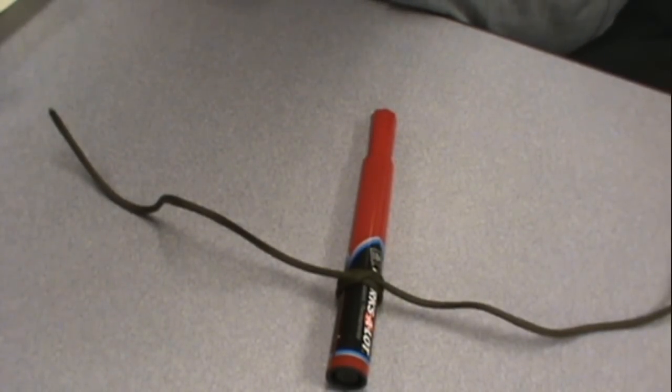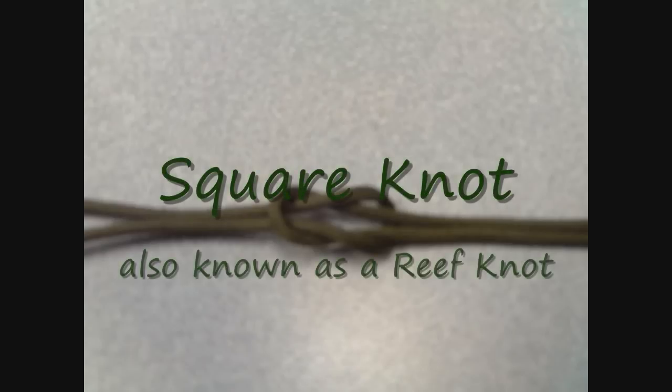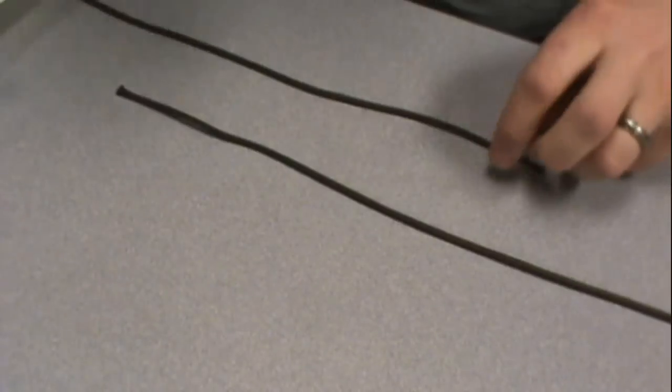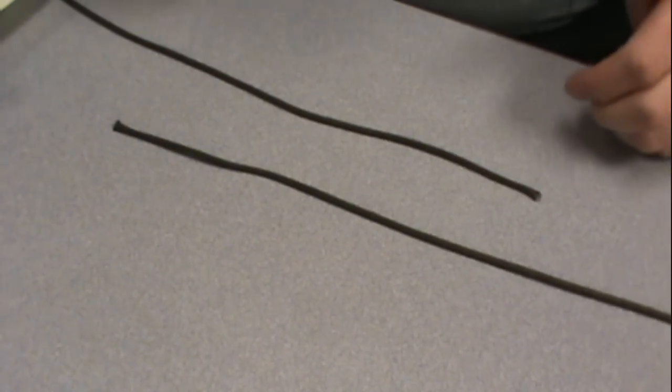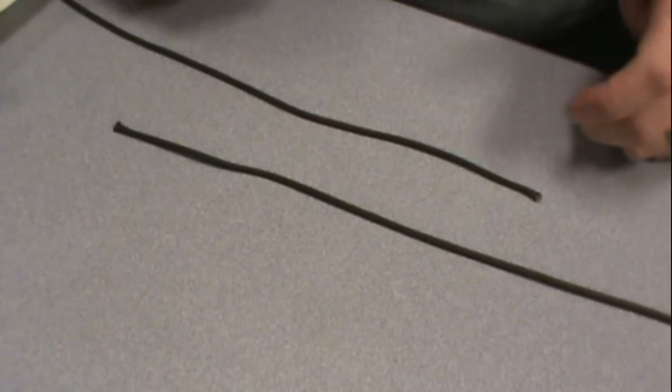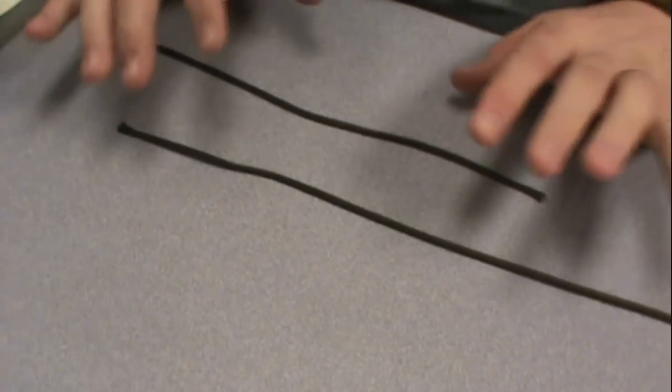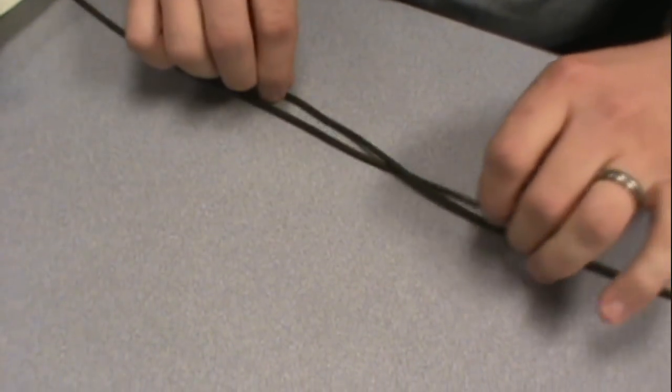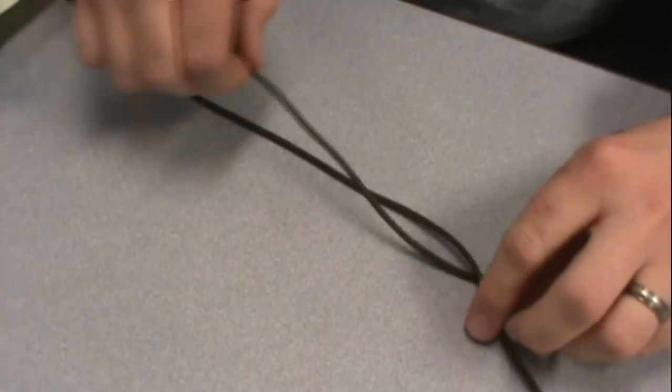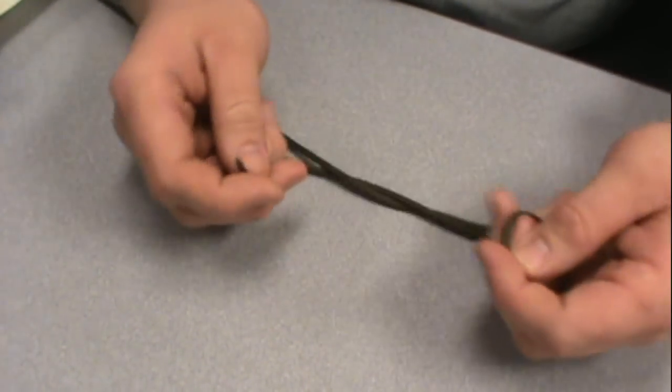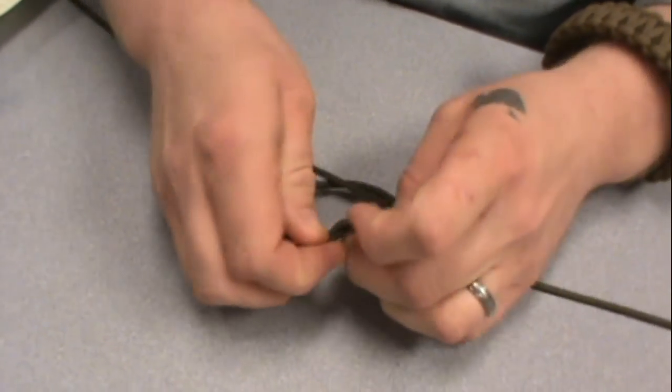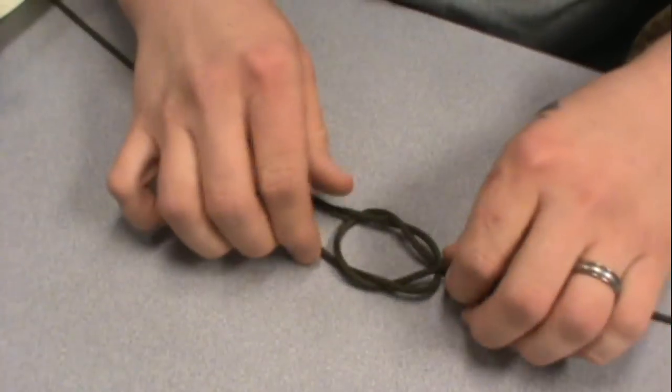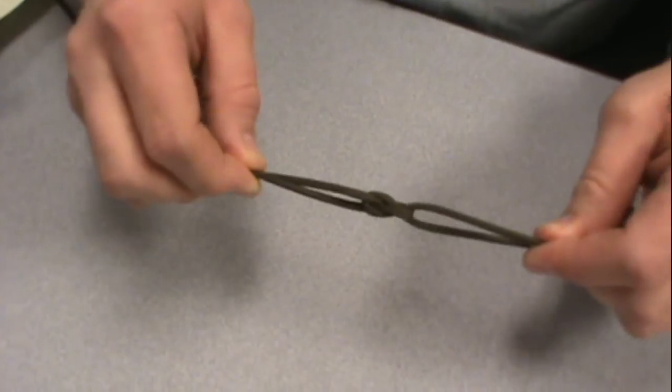Next knot we'll be going over is the square knot. Now with the square knot you're going to need two pieces of rope. Square knot is generally used to join two ropes together temporarily. Now this isn't the strongest way to do it, but in an emergency it works really well. Now you cross your ropes. You bring this top rope back underneath. Now a common mistake made when doing these is to just cross them. And as you can see that doesn't really work too well.